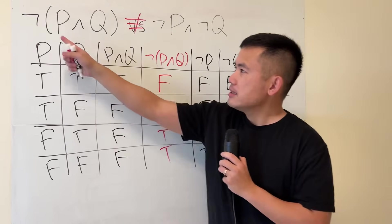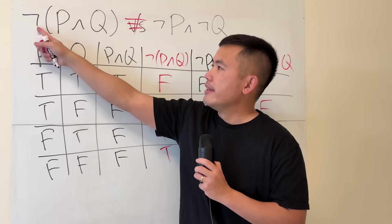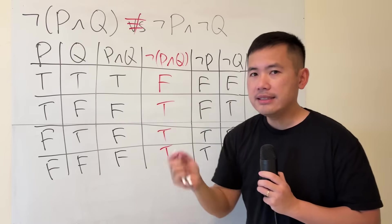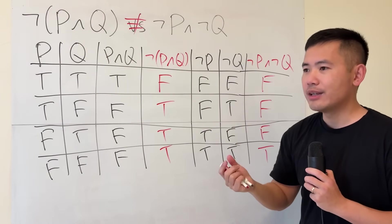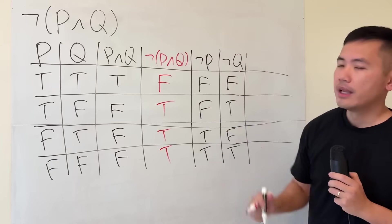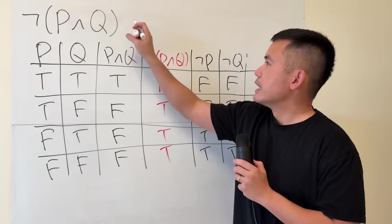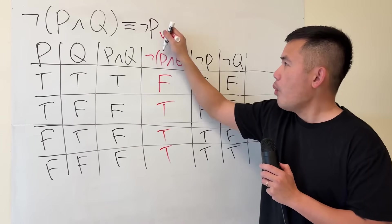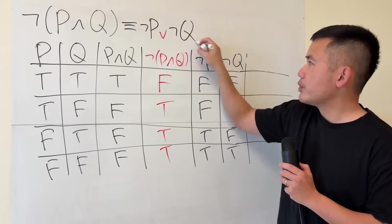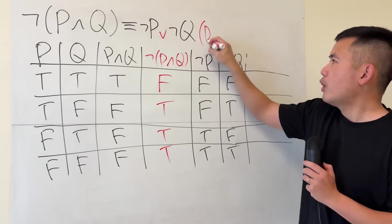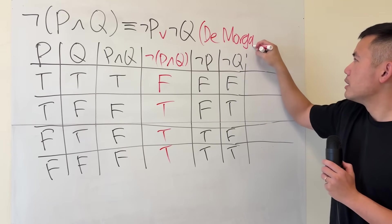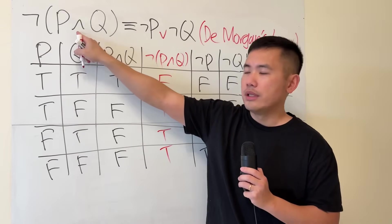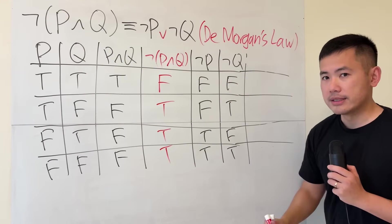The idea here is that distributing a NOT over an AND statement is not done this way. If you have a NOT and the inside is an AND statement, you have to change that AND to an OR. So not (P and Q) is logically equivalent to not P OR not Q. This is known as DeMorgan's Law. There is also another version when the inside is an OR.